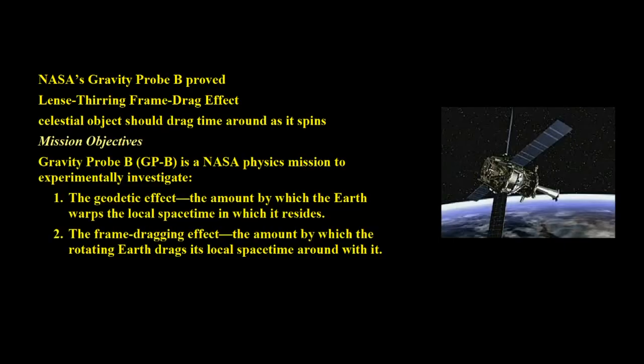There are more modern tests of general relativity. The first is Gravity Probe B. NASA sent a probe and proved the Lense-Thirring frame-drag effect — saying that when the Earth spins, it drags time around itself. Celestial objects drag time around as they spin. The mission objectives from NASA: Gravity Probe B is a NASA physics mission to experimentally investigate the geodetic effect — the amount by which the Earth warps the local space-time in which it resides — and the frame-dragging effect — the amount by which the rotating Earth drags its local space-time around with it.